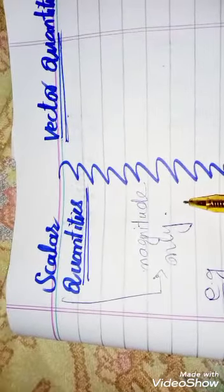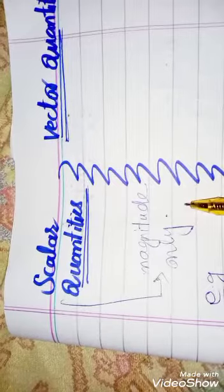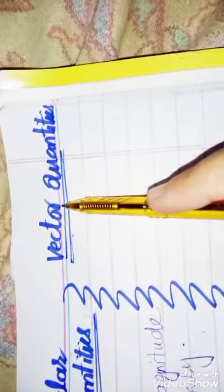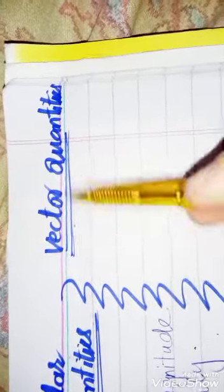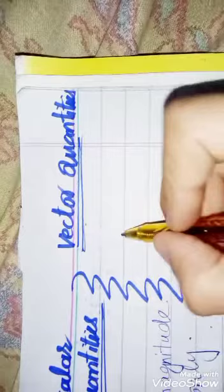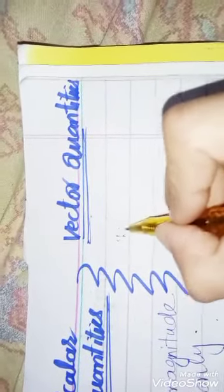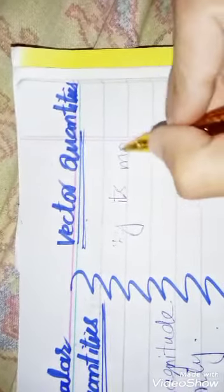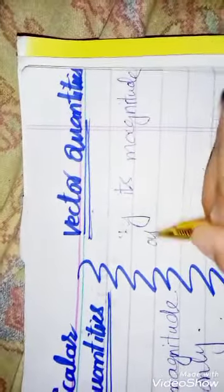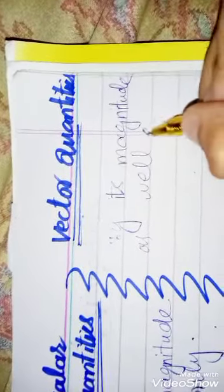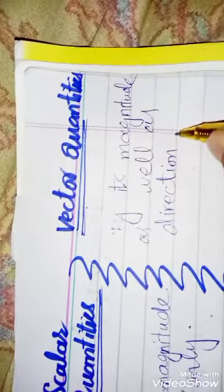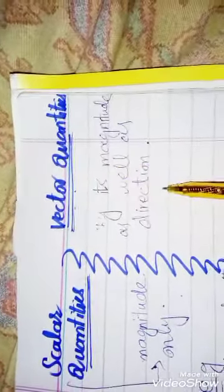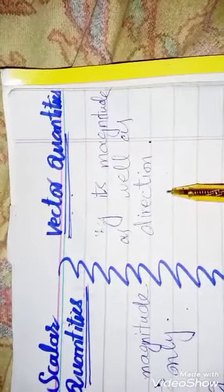We have scalar quantities. On the other hand, I will tell you about vector quantities. Vector quantities are quantities which can be described completely by their magnitude as well as direction.